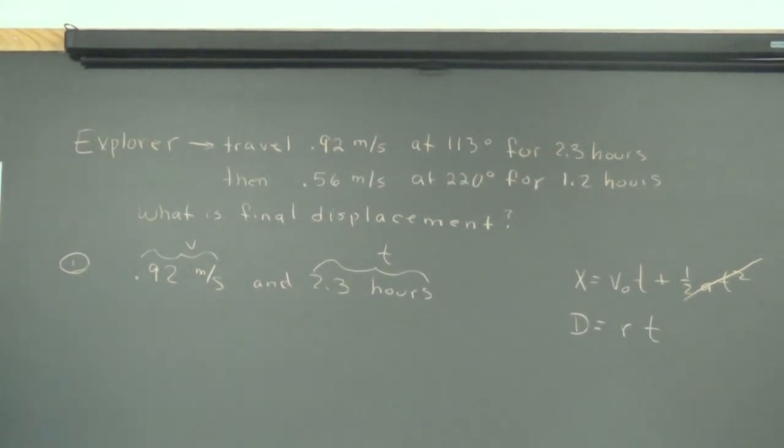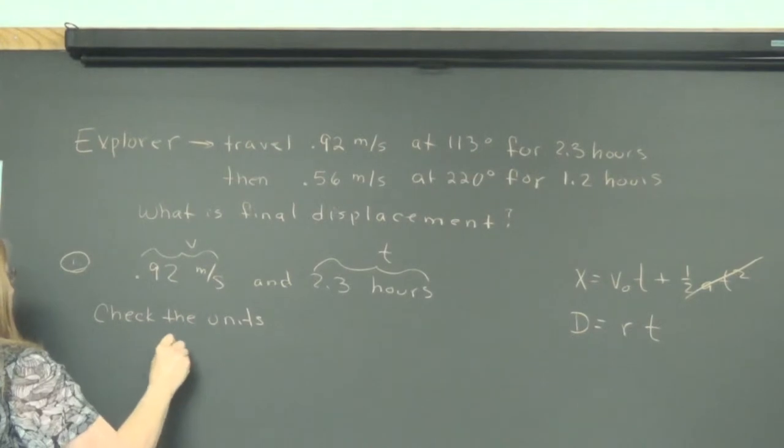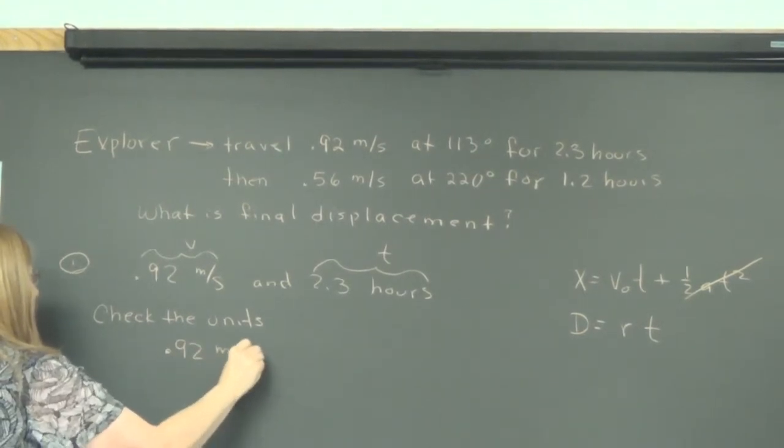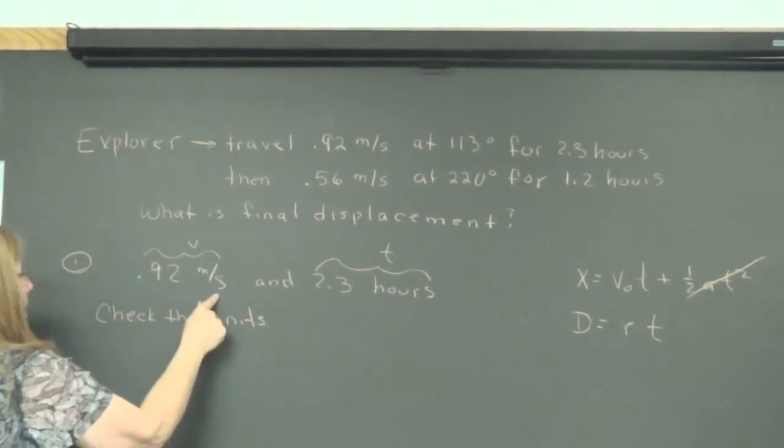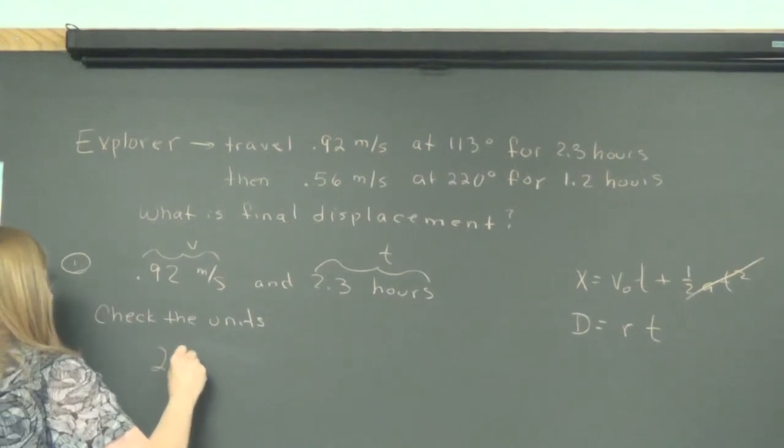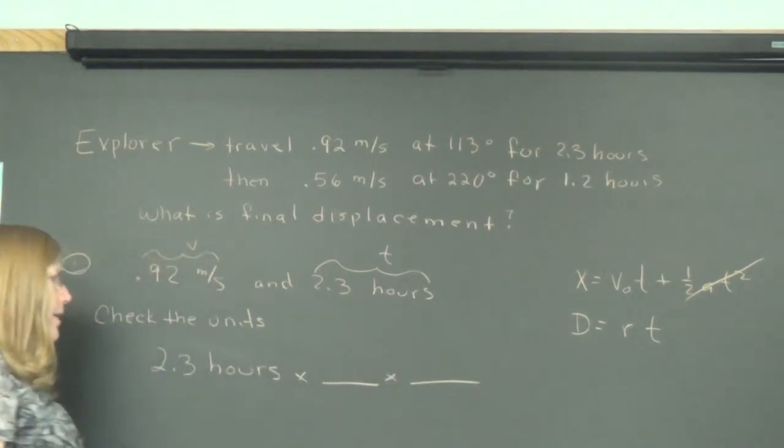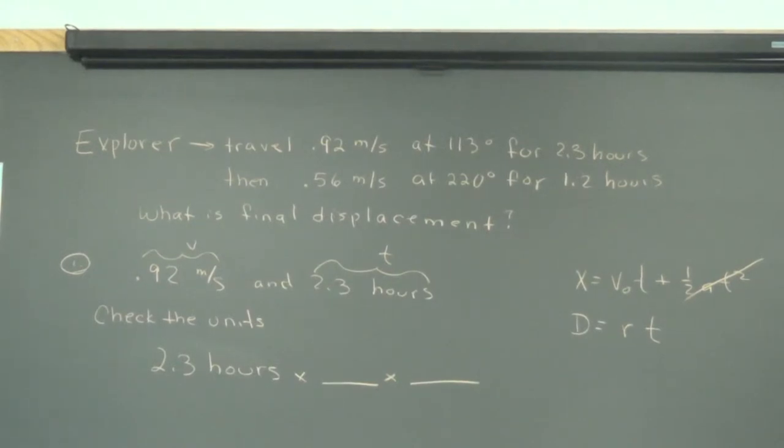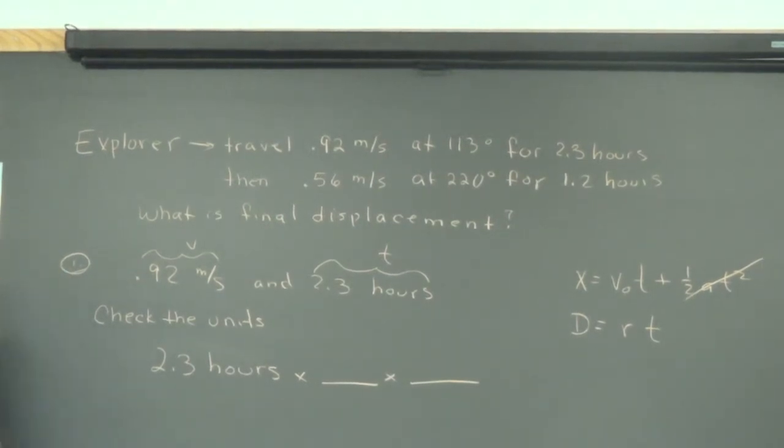If I take velocity, which is another word for rate, times time, I'll get distance. However, there is a slight complication here in that this is in seconds and this is in hours. So step number one, check the units. I'm going to check the units and I see that they're different.